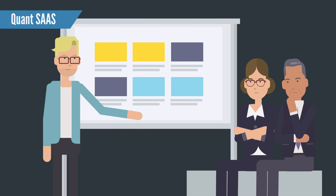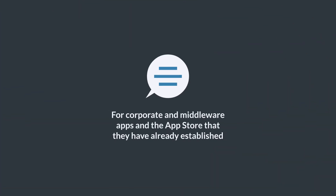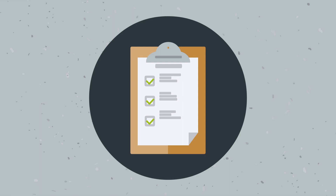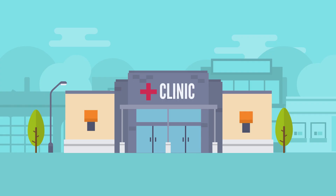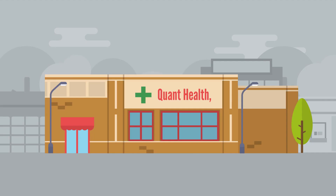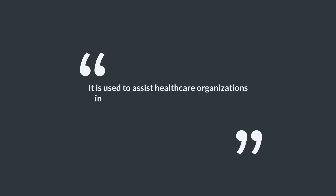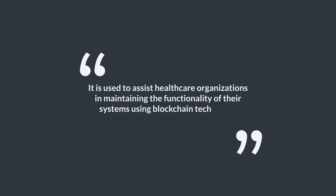Quant SaaS: Quant has plans to build its Software as a Service (SaaS) platform for corporate and middleware apps and the app store that they have already established. These will include solutions that are adapted to meet the requirements of certain industries based on the demands of a variety of business fields. The developers have pledged to place their primary emphasis on sectors including healthcare, supply chain, government services, and financial services. One of these products is called Quant Health, and it is used to assist healthcare organizations in maintaining the functionality of their systems using blockchain technology.